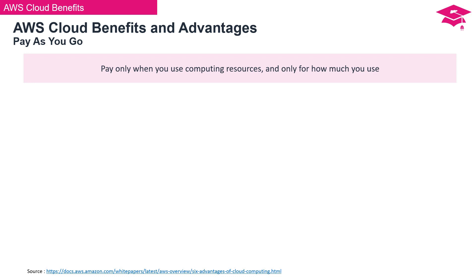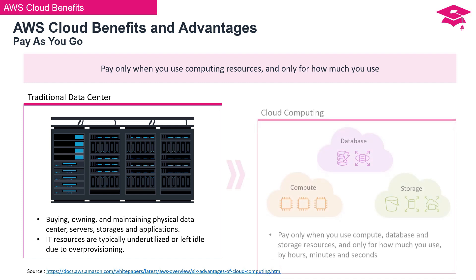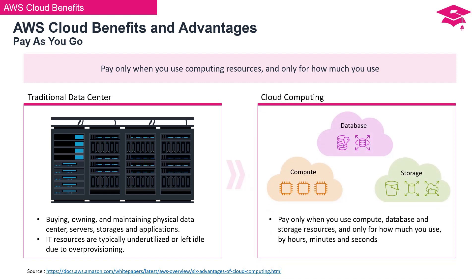Let's delve into the specific benefits of AWS cloud, beginning with pay-as-you-go. In a traditional data center, the model involves purchasing, owning, and maintaining physical infrastructure including data centers, servers, storage, and applications. IT resources are often underutilized or left idle due to over-provisioning. Contrastingly, in cloud computing, you only incur charges for compute, database, and storage resources when actively using them. Moreover, you pay for precisely the amount you consume, with billing granularity down to hours, minutes, and even seconds.